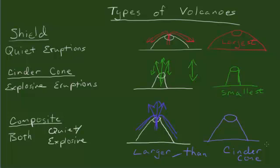So you have three types of volcanoes. We have our shield, we have our cinder cone, and we have our composite. And everything is predicated on the type of eruptions, either quiet eruptions or explosive eruptions.